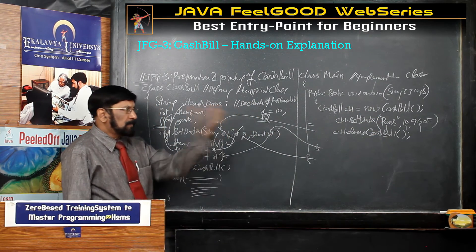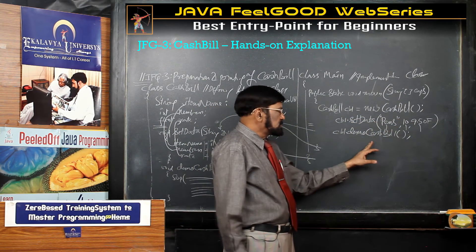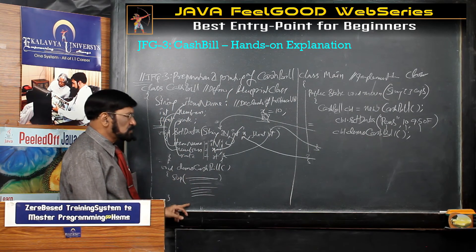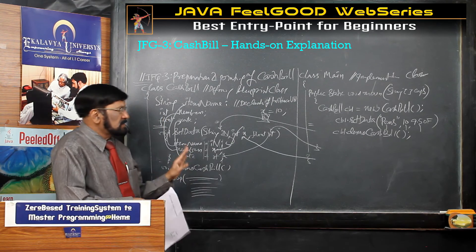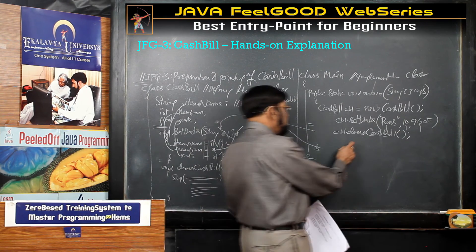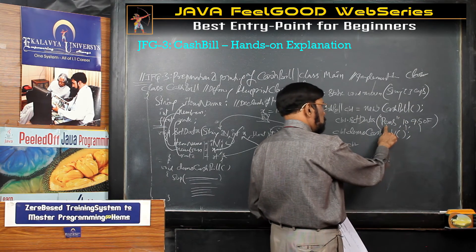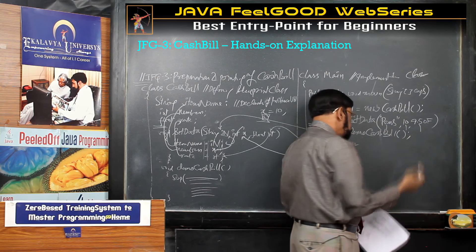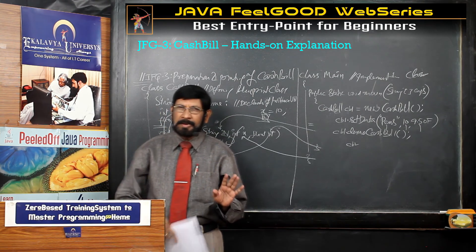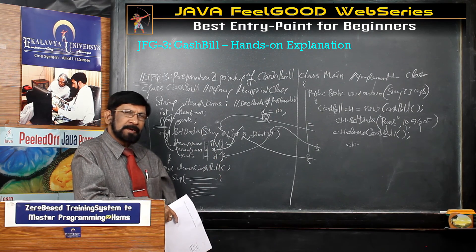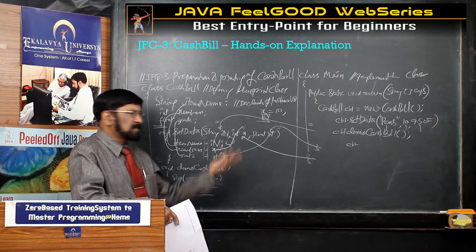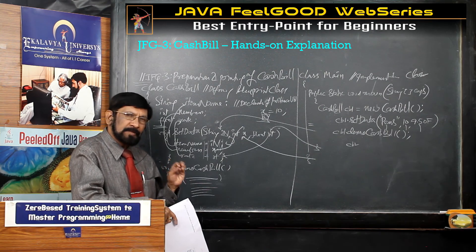setData is like your mouth — from outside you supply the food (data). demo is like your heart — it takes whatever it needs directly and the SOP statements inside print the cash bill. If you want a second cash bill, create cb2 with different values like notebook, 5, 16.25. Any number of objects of CashBill type you can create. Through this hands-on approach, every bit is explained — if you still have doubts, write to me.